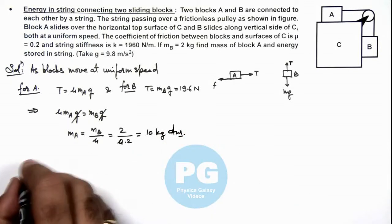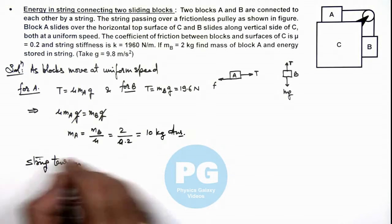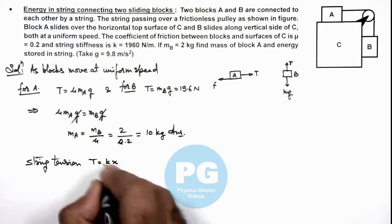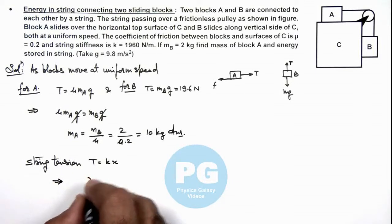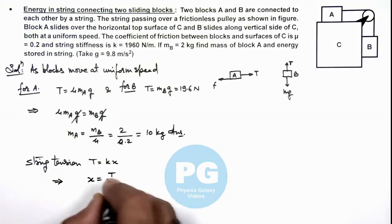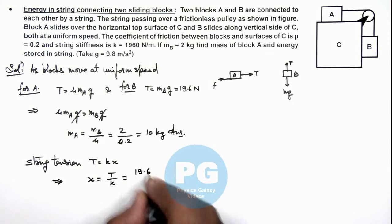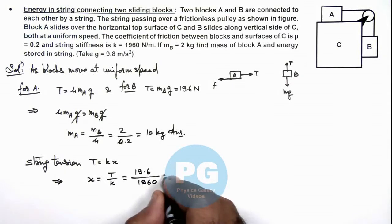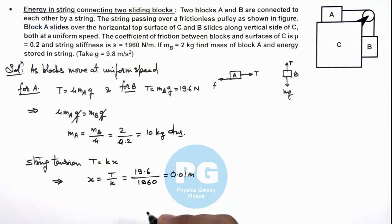And as we are given with the string tension, we already calculated it. This tension must be equal to kx if k is the string stiffness. This implies the value of string elongation can be given as T by k. So here the value of T we calculated as 19.6 and the value of k is 1960, then this is giving us the extension to be 0.01 meter or 1 centimeter.